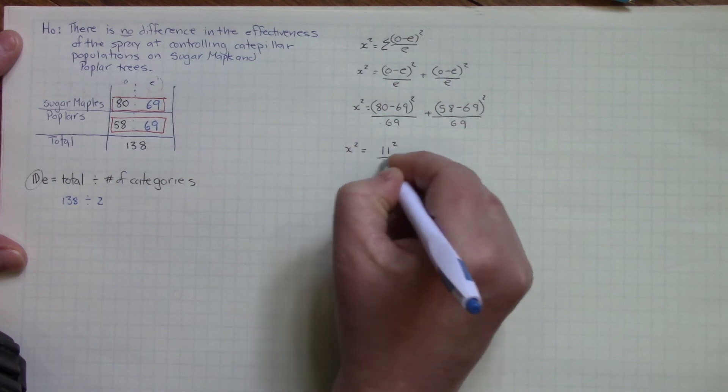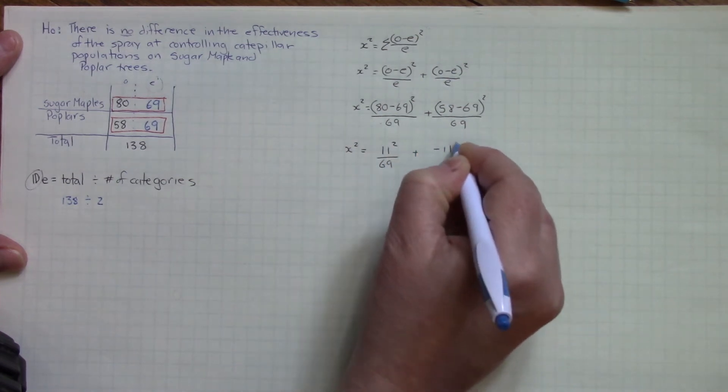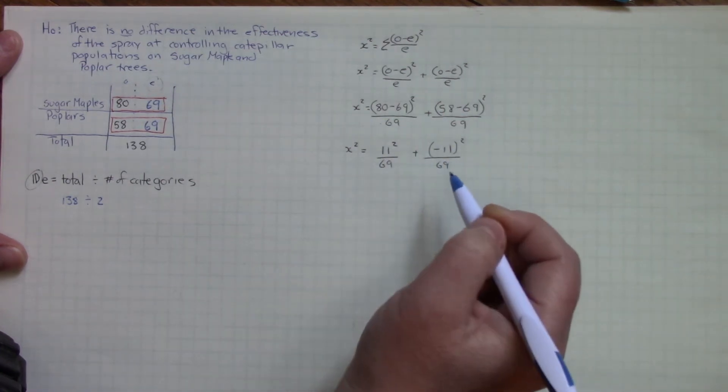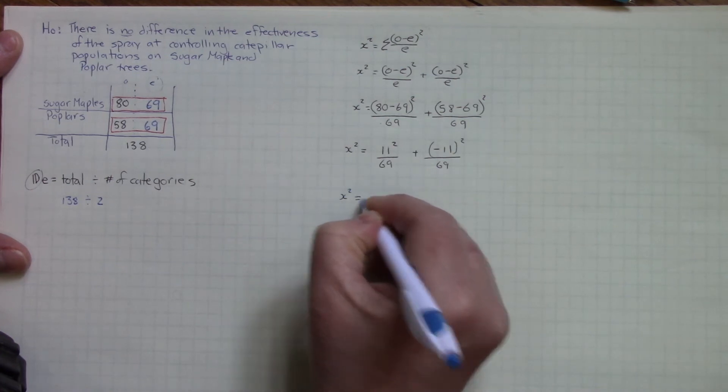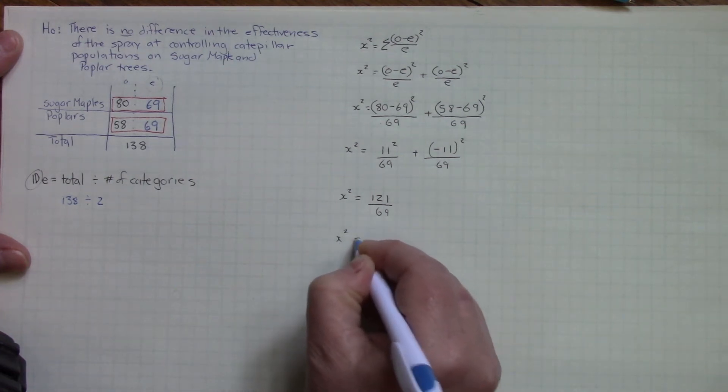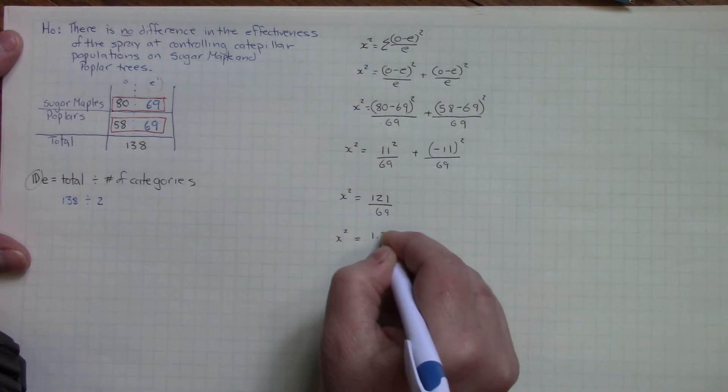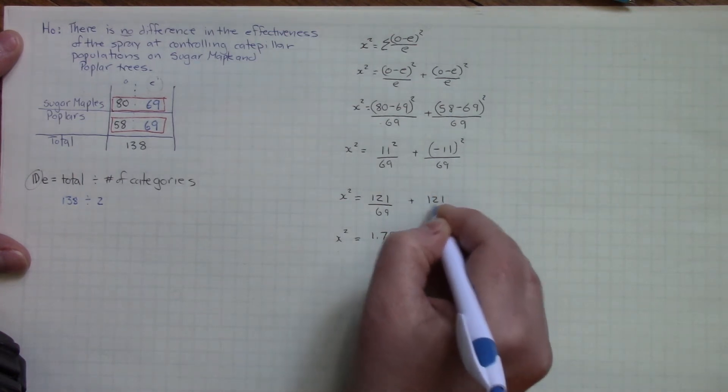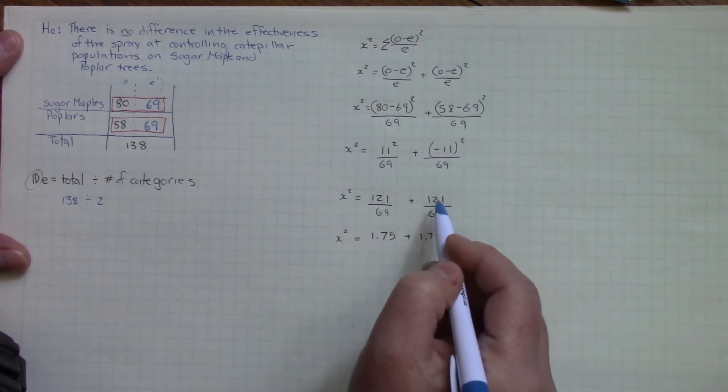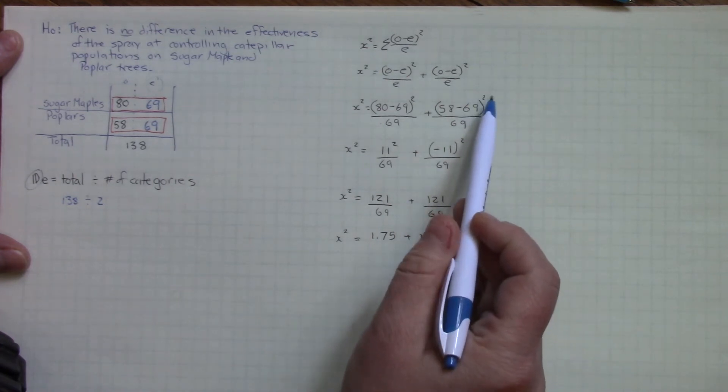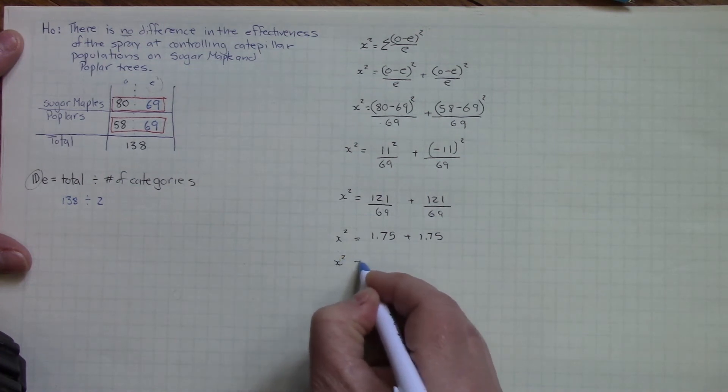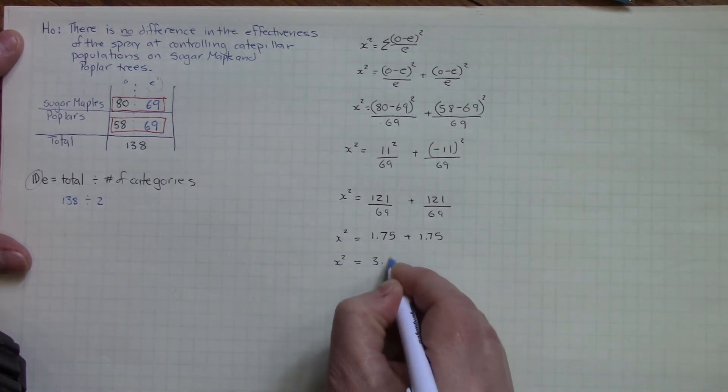Now this equals 11 squared and this is negative 11 squared. This is really common for our numerators to be in positive negative pairs like this. And we get the same numerator because squaring a negative makes a positive. That is pretty much the reason why that squaring is there, to try and get rid of negatives. This means that our chi-squared is 3.5.